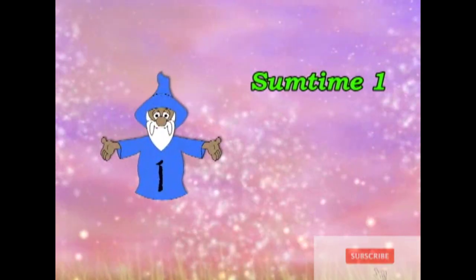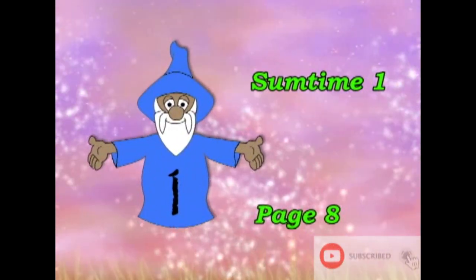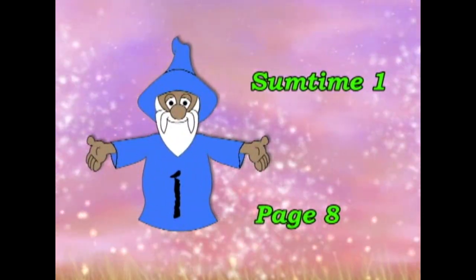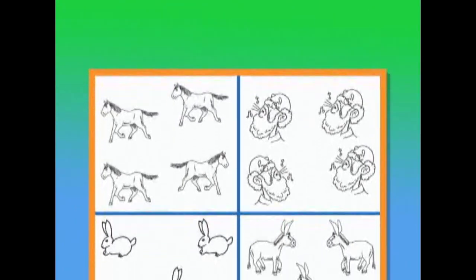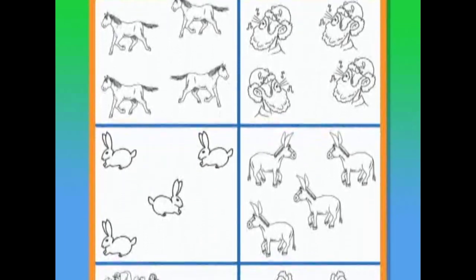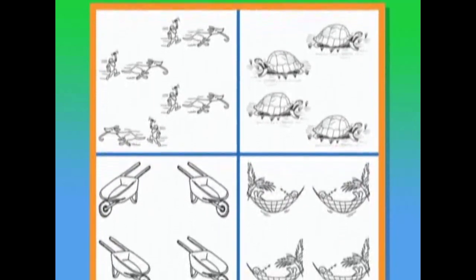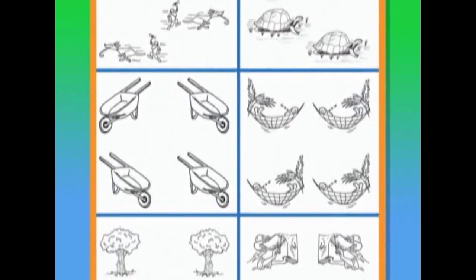Welcome to Sumtime One. Today we're working with page 8. On page 7 we tried to find different people and animals facing right when all the others were facing left. Today we're going to do the opposite. We're going to look for people and animals facing left when everyone else is facing right.